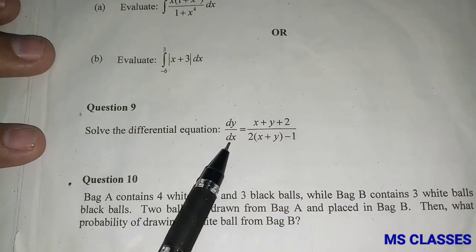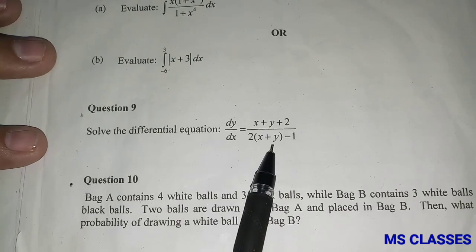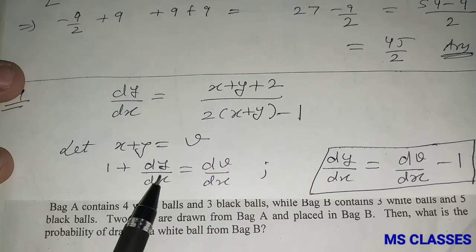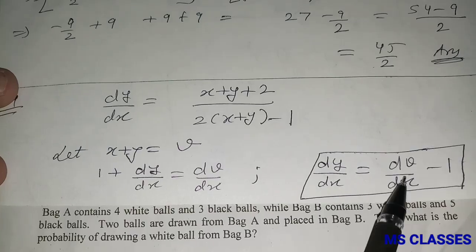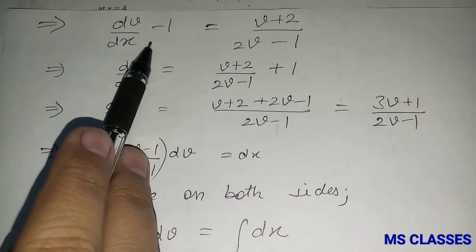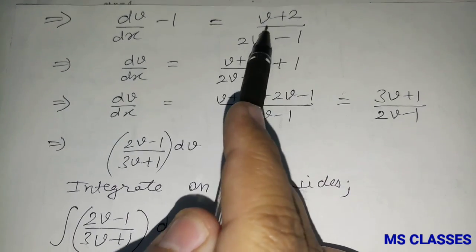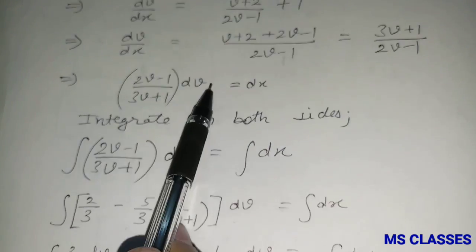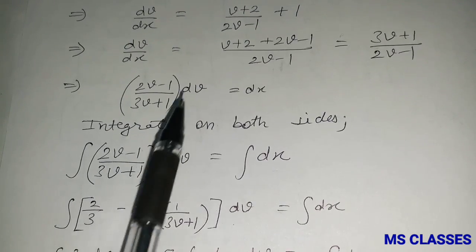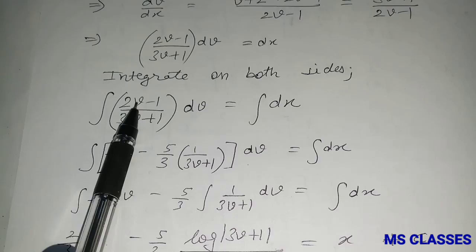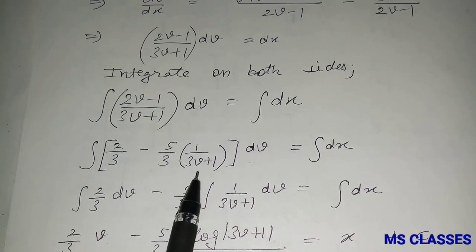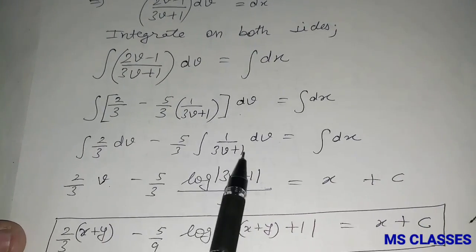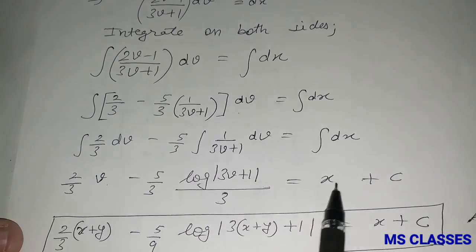Solve the differential equation dy/dx = (x + y + 2)/(2x + y - 1). Let v = x + y, so dv/dx = 1 + dy/dx, giving dy/dx = dv/dx - 1. Substituting: dv/dx - 1 = (v + 2)/(2v - 1). Rearranging: dx = (2v - 1)/(3v + 1) dv. Integrating both sides and using partial fractions gives (2/3)v - (5/9)log|3v + 1| = x + C. Replacing v = x + y gives the final answer.